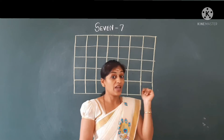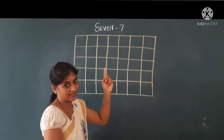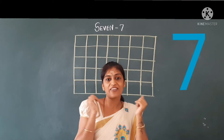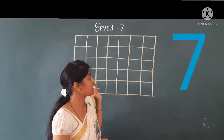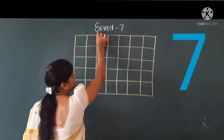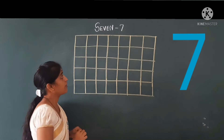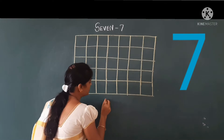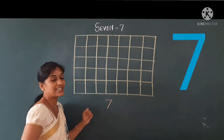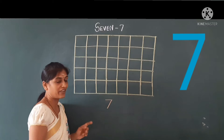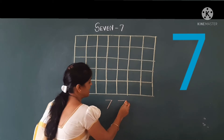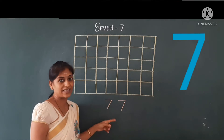Now we will learn how to write number 7. Number 7 — God is in heaven. Now we will learn how to write number 7. For 7, we need one sleeping line and one slanting line. This is number 7. So easy!